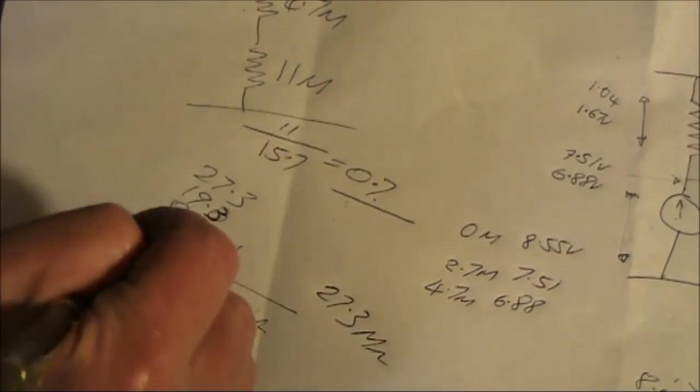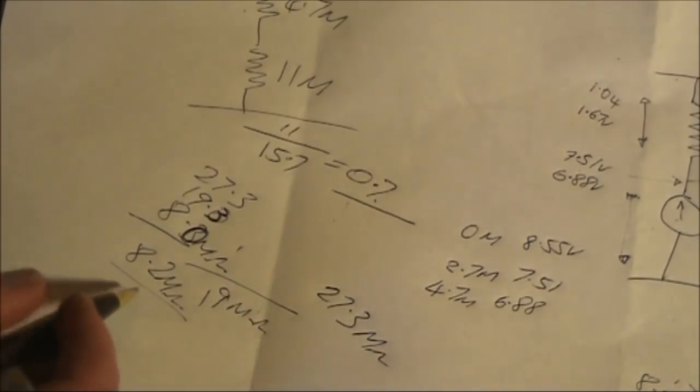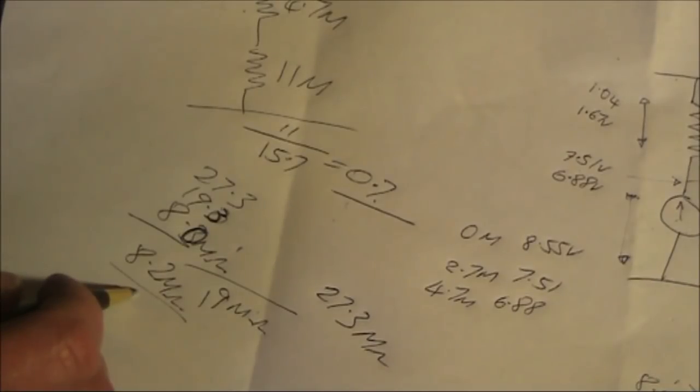For our purposes, an 8.2 megohm resistor, which is a preferred value, is near enough. Or if you don't have an 8.2 megohm resistor, then you could use another combination like a 6.8 megohm in series with, say, a 1.2 or 1.5 megohm.